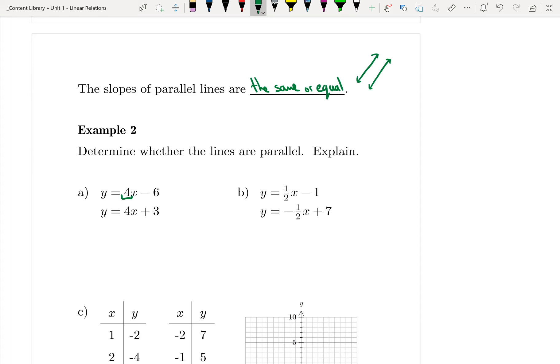In this case, the value is in front of the x, so 4 and 4. So here the slopes are the same, or they're equal, which means that they are parallel.